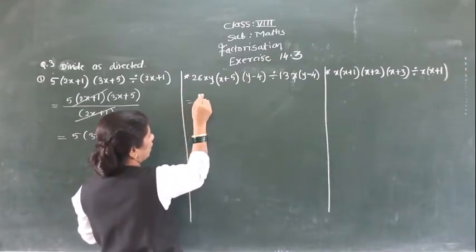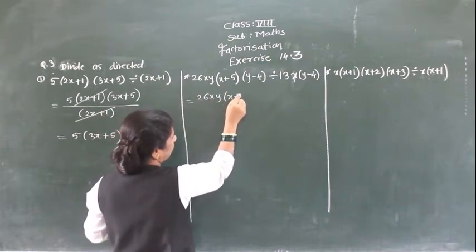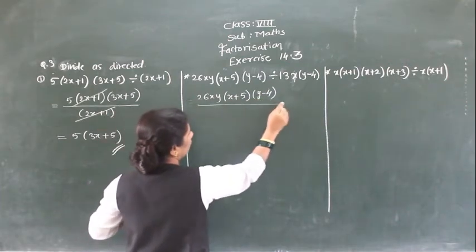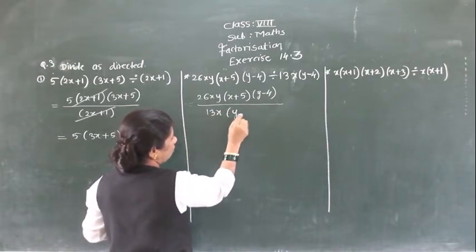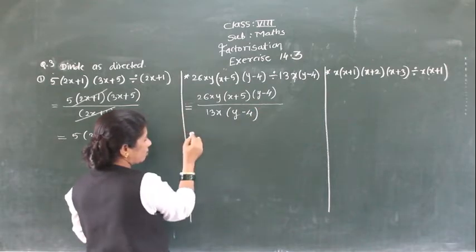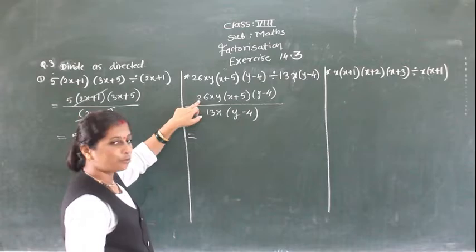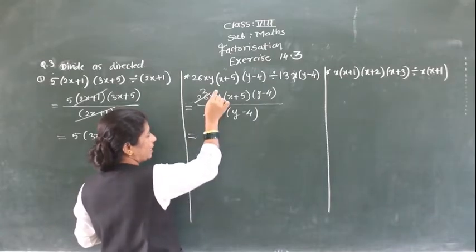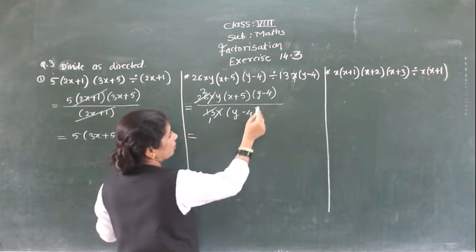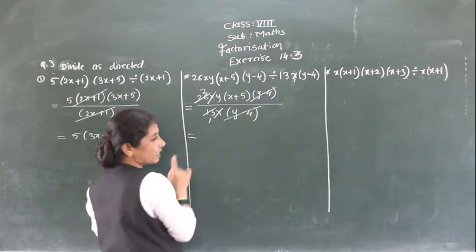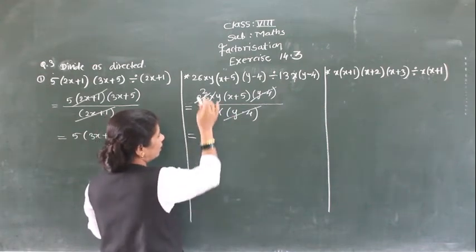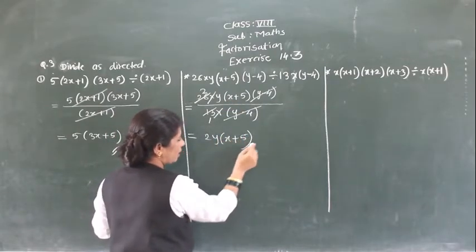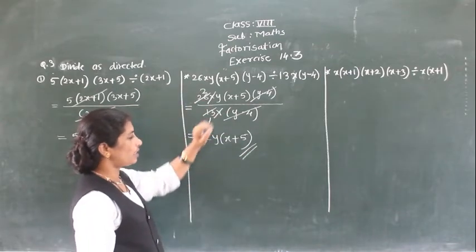Very easy example. Next we will write: 26x(y-4) divided by 13x(y-4). Now see here: 2×13 = 26x, so 13 and 13 cancel. This x and this x get cancelled. Again (y-4) is a factor, so these two factors get cancelled. So what is remaining: 2(x+5).